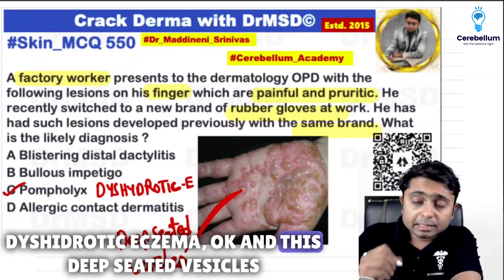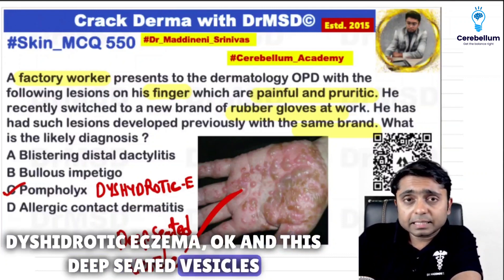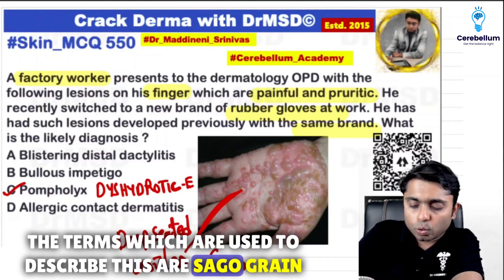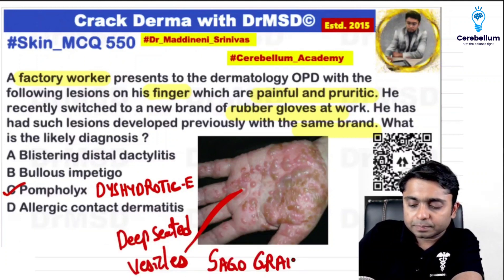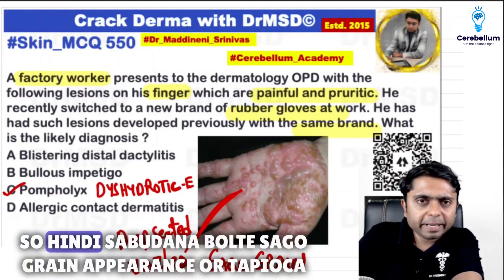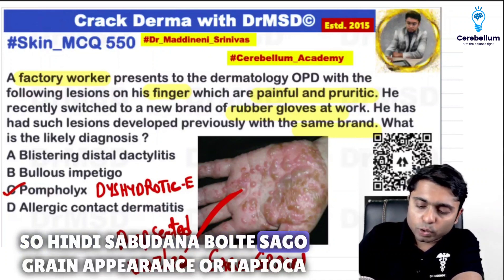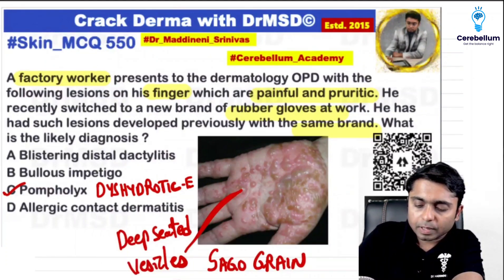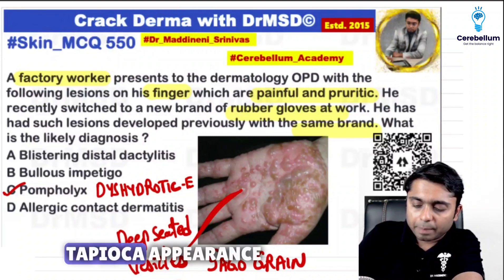These deep seated vesicles have characteristic descriptive terms — they are described as sago grain appearance (sabudana in Hindi) or tapioca appearance.